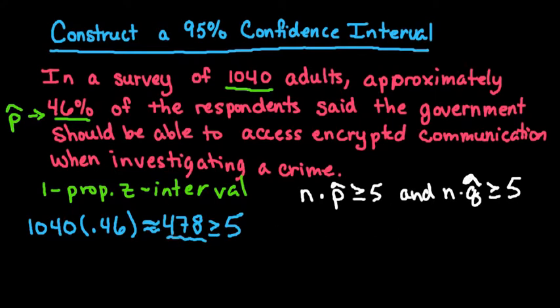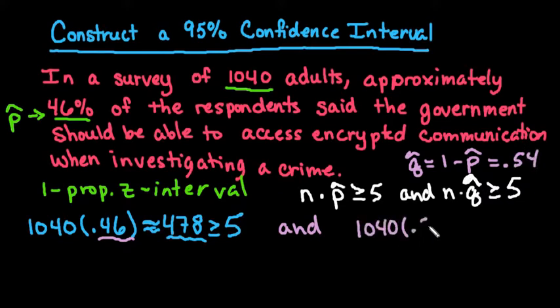We have to check n times q-hat. Remember that q-hat is always equal to 1 minus p-hat. Since our p-hat is 0.46, our q-hat would be 1 minus 0.46, which gives us 0.54. So we have 1040 times 0.54, which is approximately 562. You could also do 1040 minus 478, it would give the same answer, but it just has to be greater than or equal to 5.